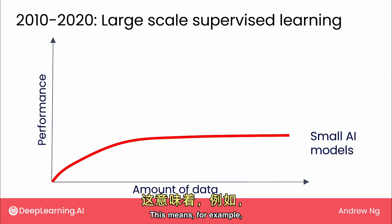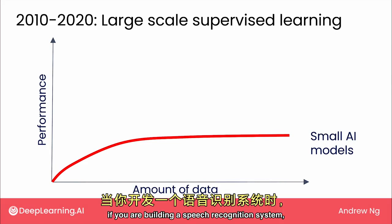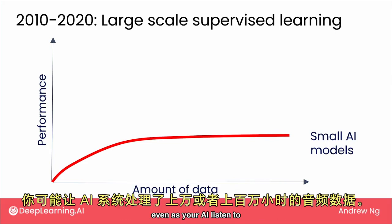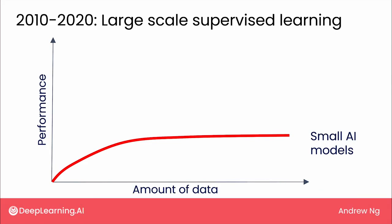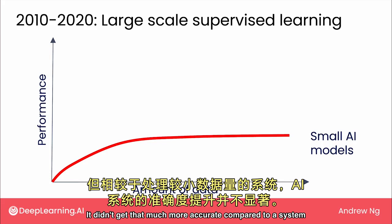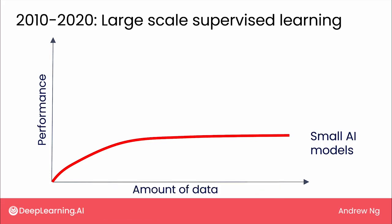This means, for example, if you are building a speech recognition system, even as your AI listened to tens of thousands or hundreds of thousands of hours of data — that's a lot of data — it didn't get that much more accurate compared to a system that listened to only a smaller amount of audio data.